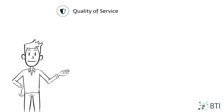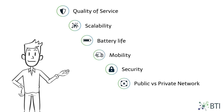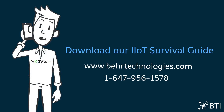Here are seven factors you should take into consideration: Quality of service, Scalability, Battery life, Mobility, Security, Public vs. Private Network, and Proprietary vs. Standard. If you'd like to learn more about which LPWAN technology is right for you, download our Industrial IoT Survival Guide.